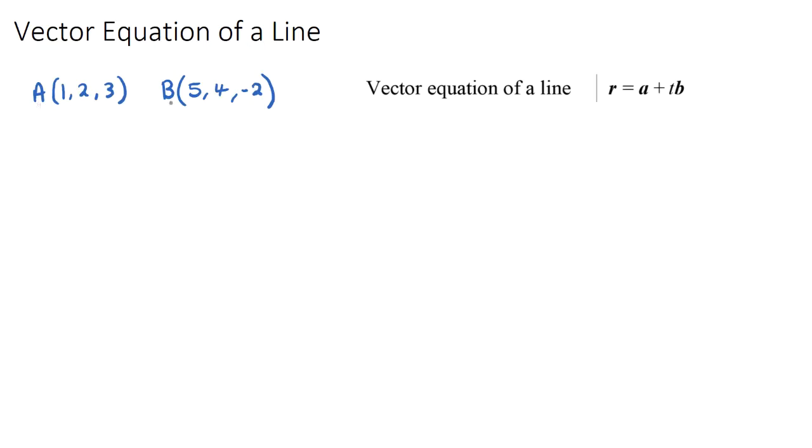So I've given you two coordinates, and these are just coordinates on a three-dimensional plane. The coordinate A is a point where 1, 2, and 3, and coordinate B is 5, 4, negative 2.